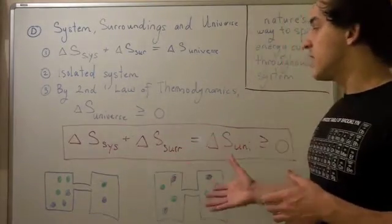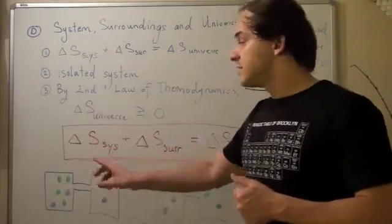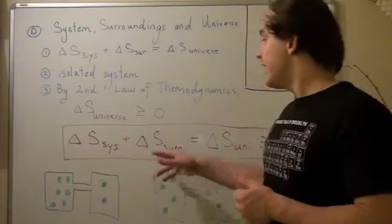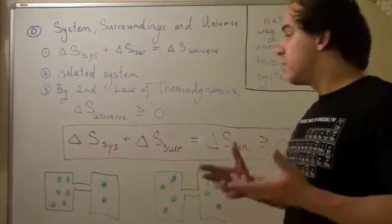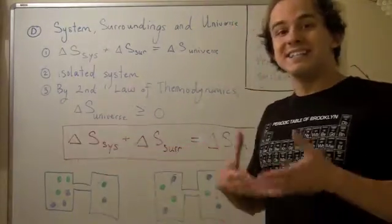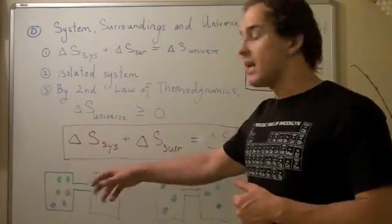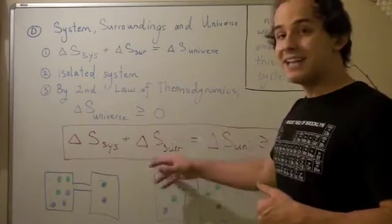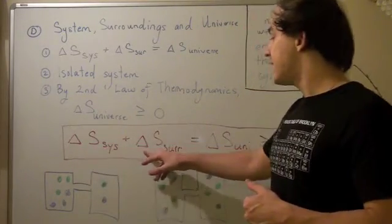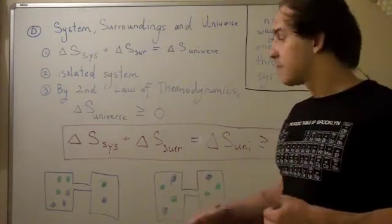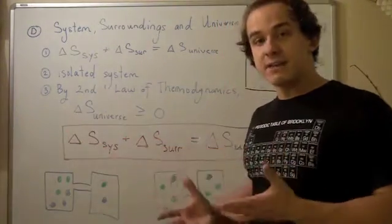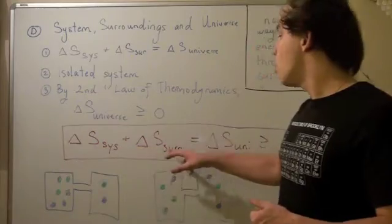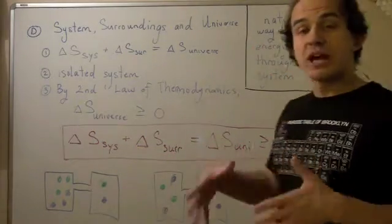What this also says is that the entropy of the system can decrease as long as there is a greater or equal increase in the entropy of the surrounding. Suppose that this decreases by 10, so this is negative 10. If there's an increase in the surroundings by 10, then negative 10 plus 10 gives you zero—that works. If this decreases by 10 and the surroundings increase by 11, then negative 10 plus 11 gives you 1, also positive, so that works.